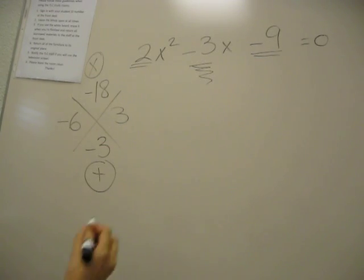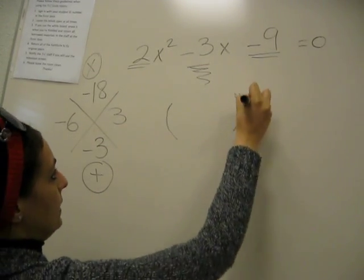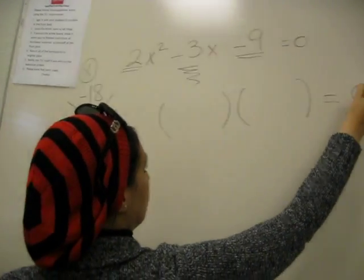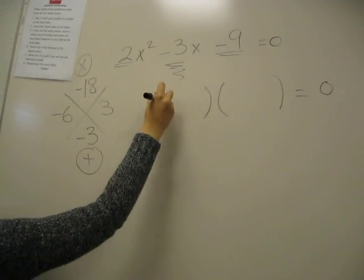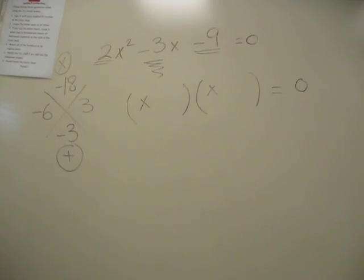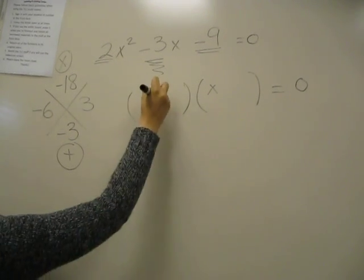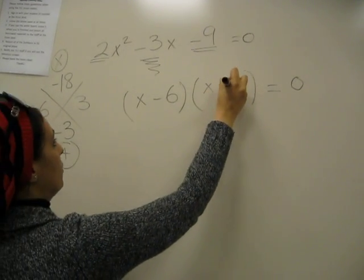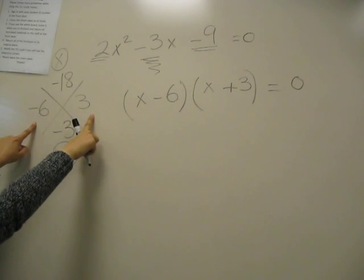And this is what we're going to do. We're going to open two parentheses. We're going to have an X and an X, because that's how you get X squared. You're going to have negative 6 and positive 3, because those are the numbers that we chose.